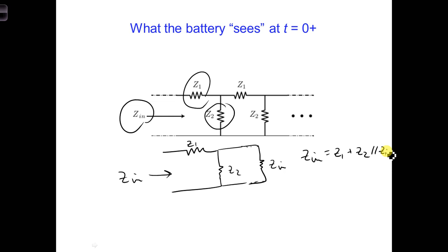If we continue to assume we have a lossless transmission line with only inductors and capacitors, then we can say z1 is equal to j omega l prime delta z, and y2, the admittance for z2, corresponding to z2, is j omega c prime delta z.